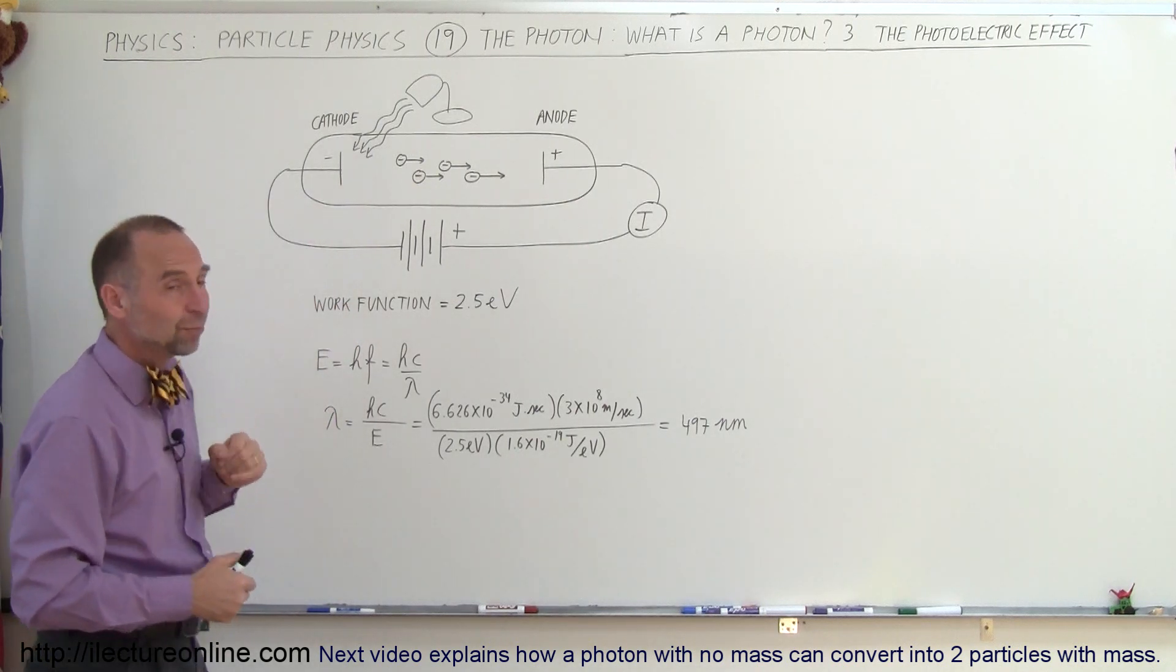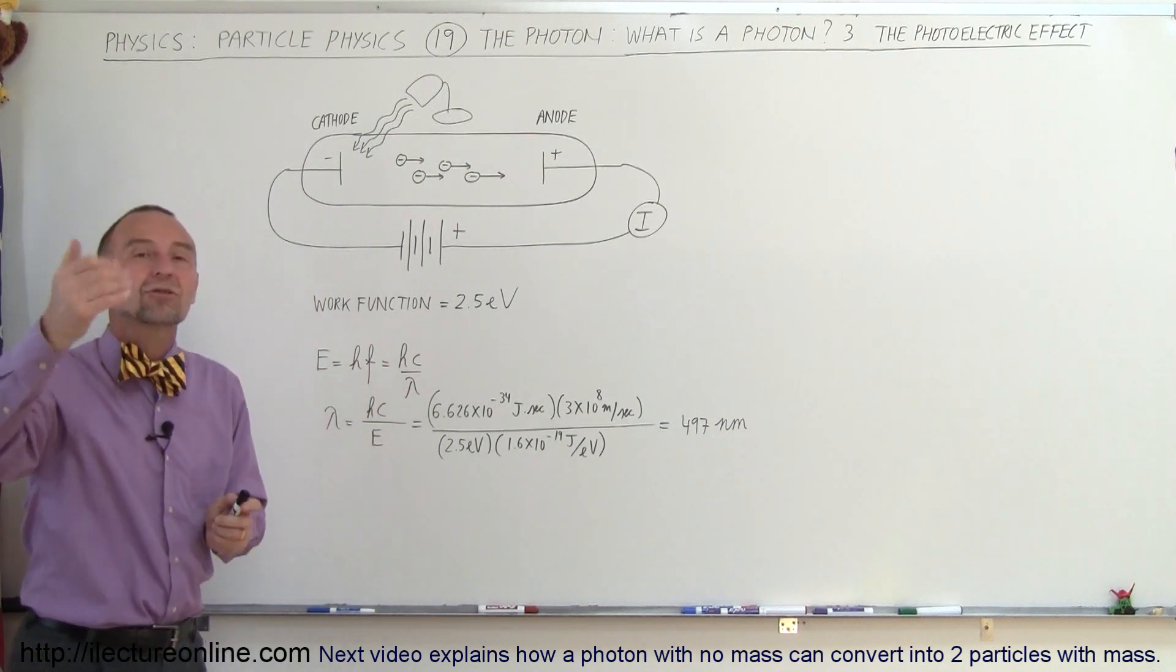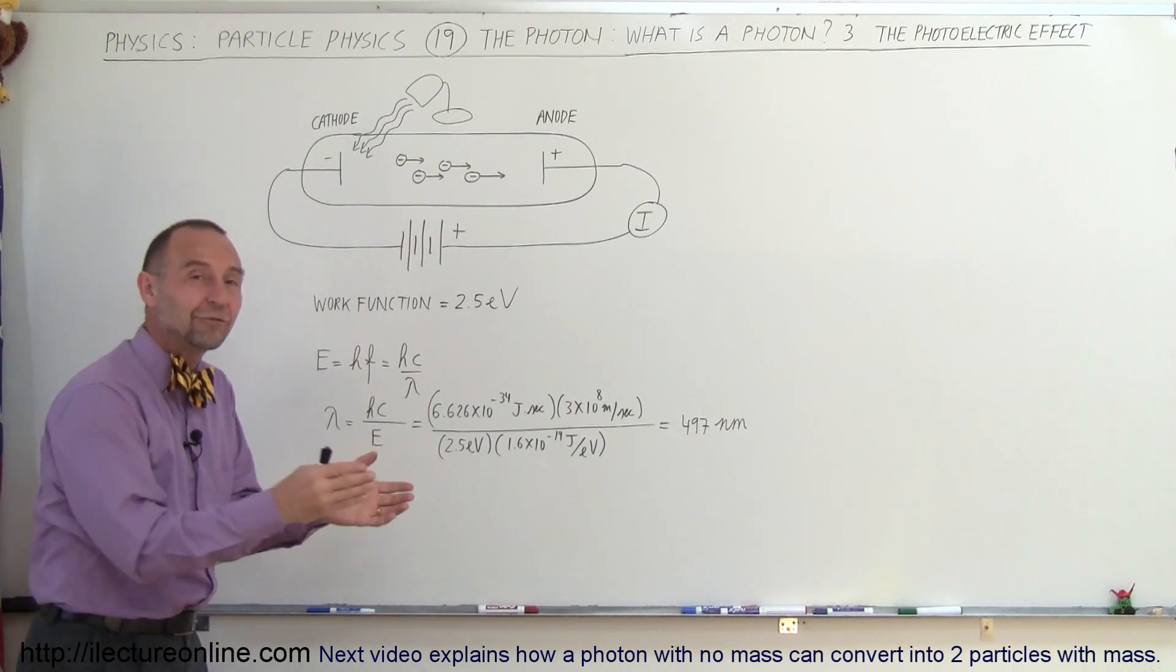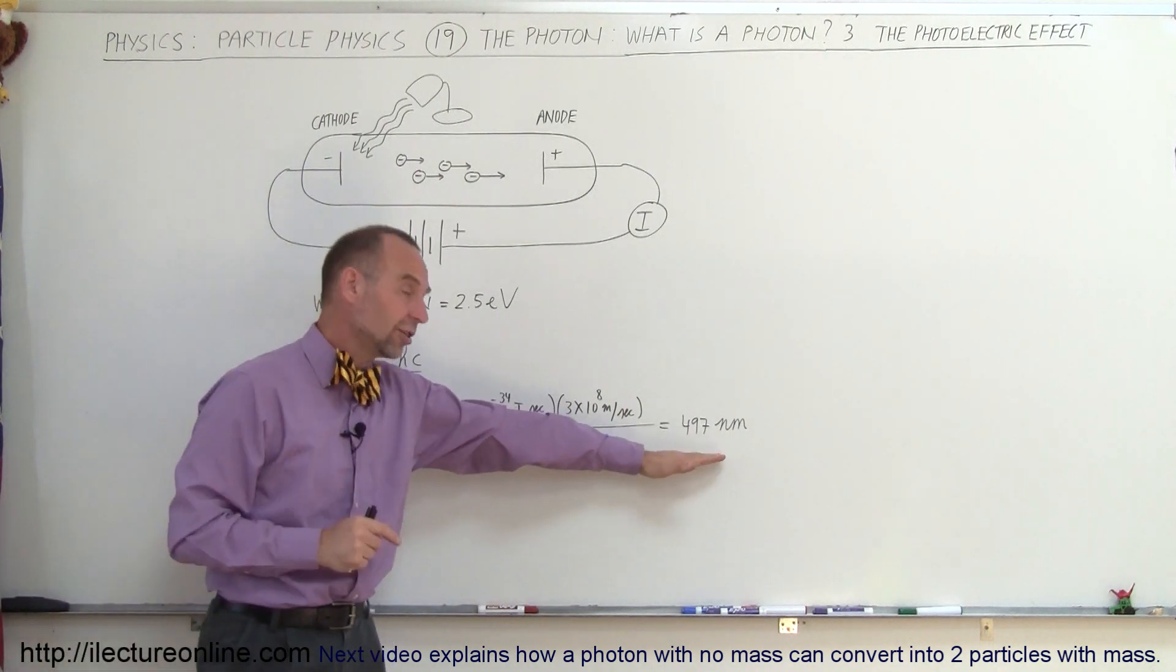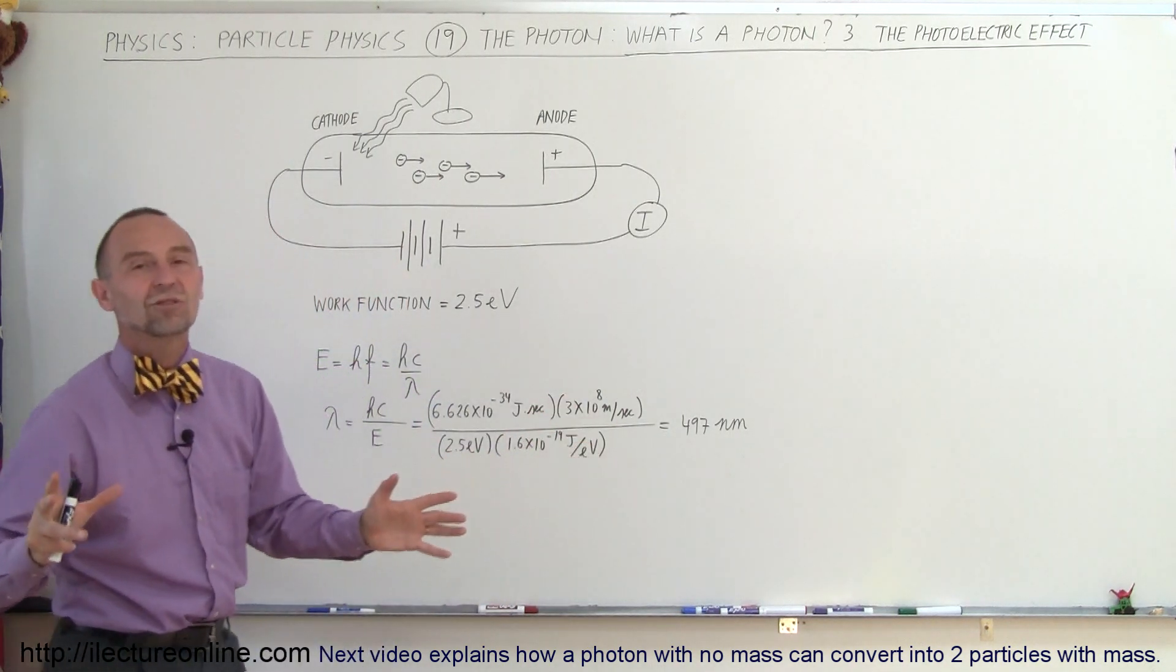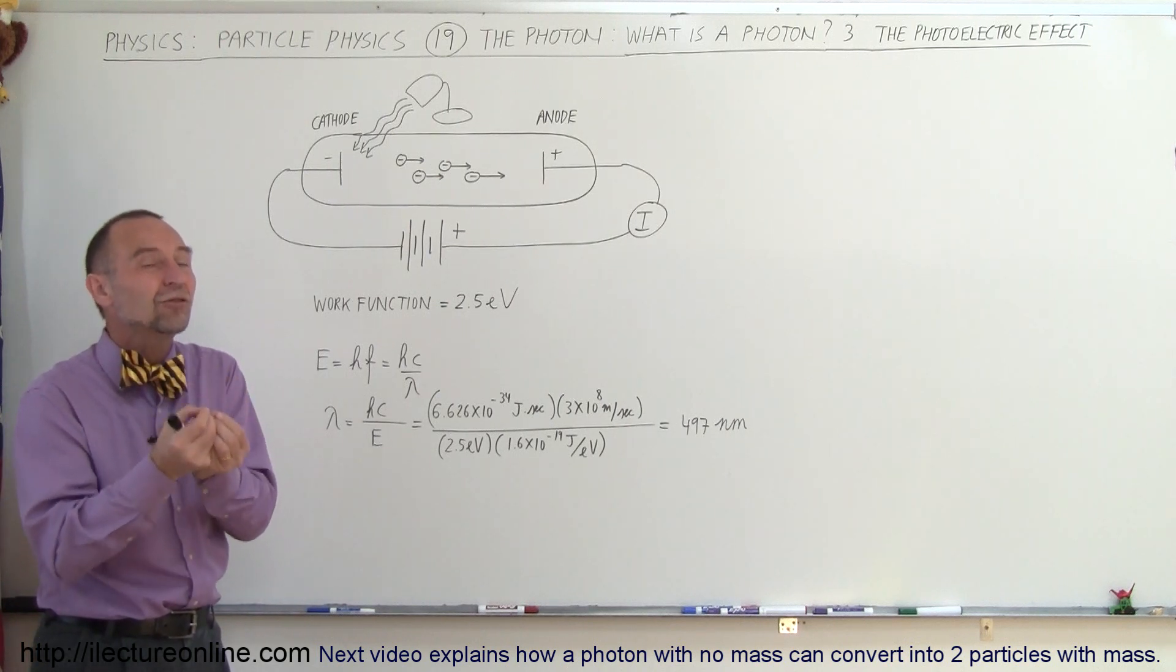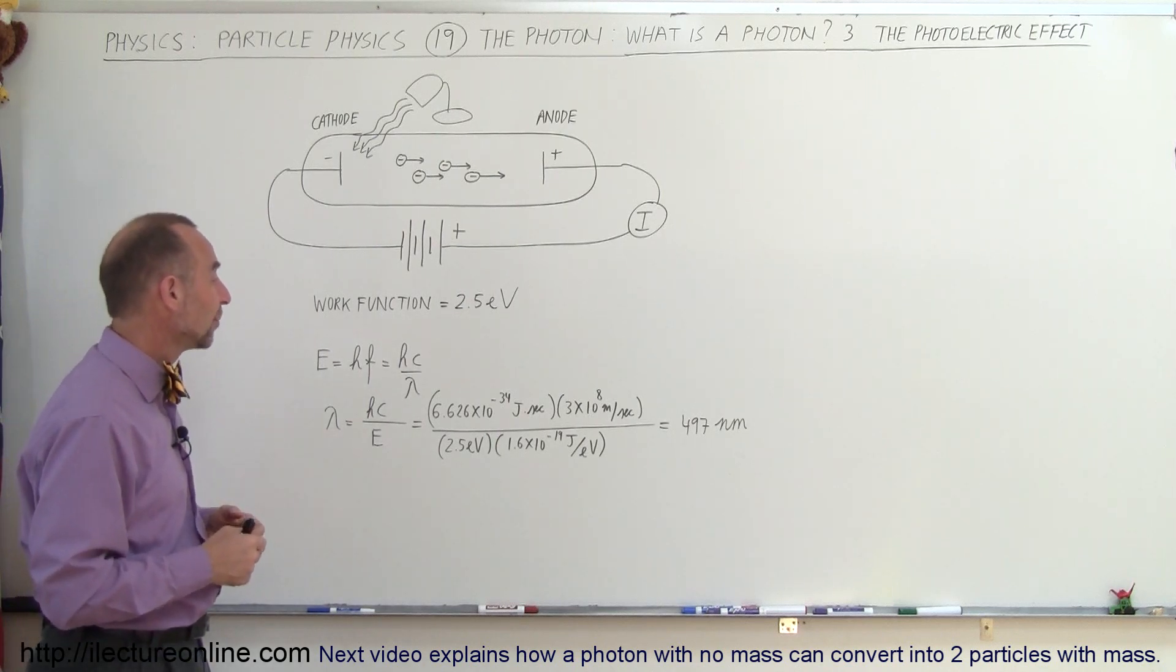would set an electron free. So you send ten photons down with the amount of energy required, ten electrons would jump free. A thousand photons, a thousand electrons would jump free. But you can send a billion photons down, each of them having not enough energy, wavelengths longer than this, and no electrons would be set free, because electrons can only absorb the energy within each photon, and if it's not enough it can't jump free, it cannot overcome the work function.